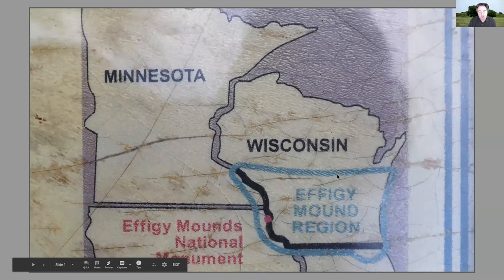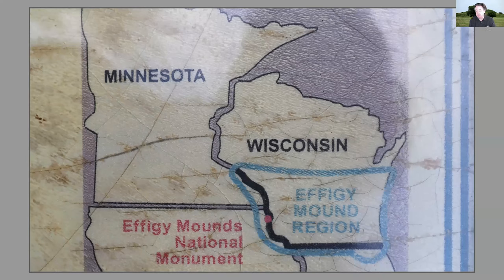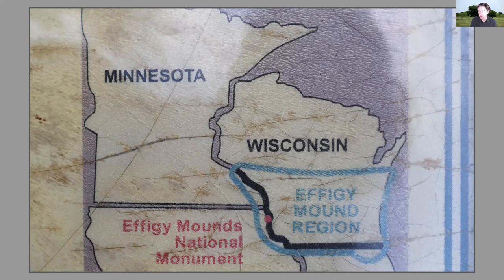Effigy mounds come largely from Wisconsin itself, which makes them a unique story for here at Lawrence and for being in Wisconsin. You can see on this map that the effigy mound area is largely the southern half of the state, bleeding over a little bit into Iowa and also into Illinois in the south. This is mainly a Wisconsin thing, and that's part of why I like this part of intro to religious studies — it gives us a chance to think about a local, really unique local story about religion that we can see here now.